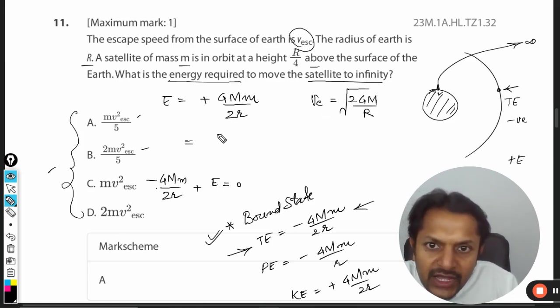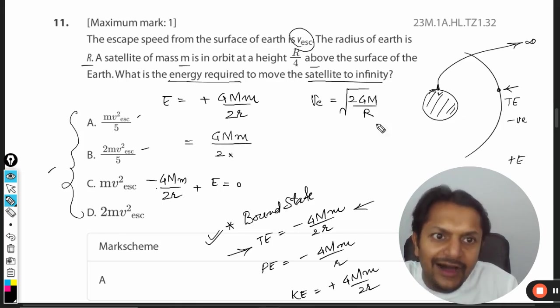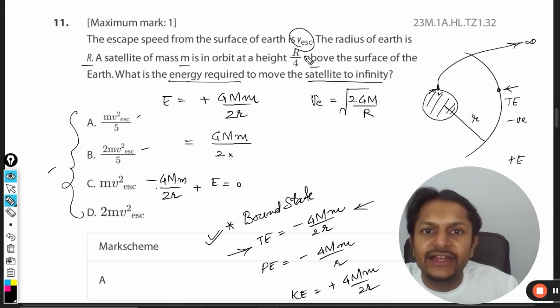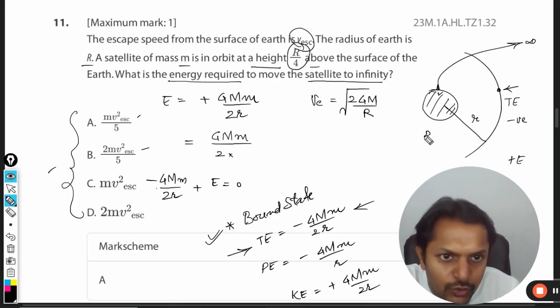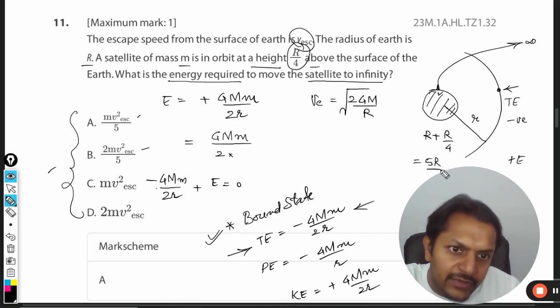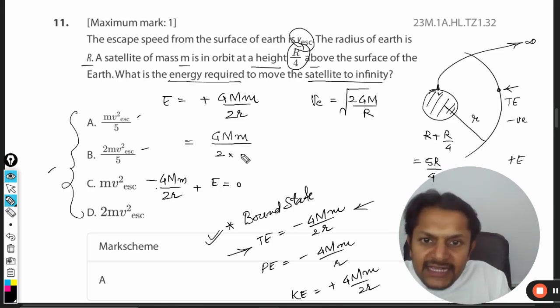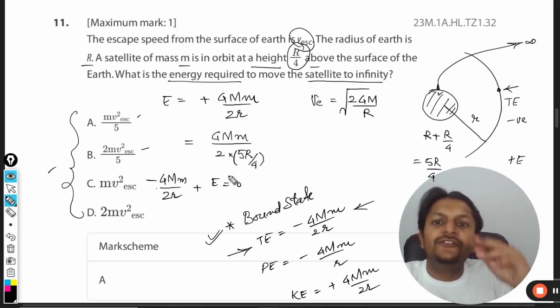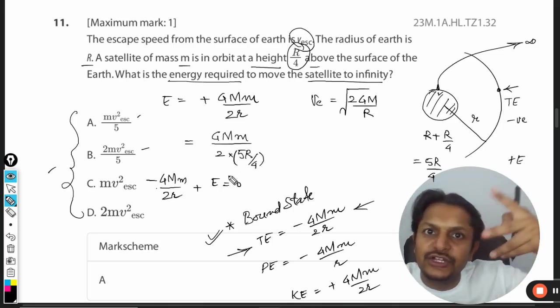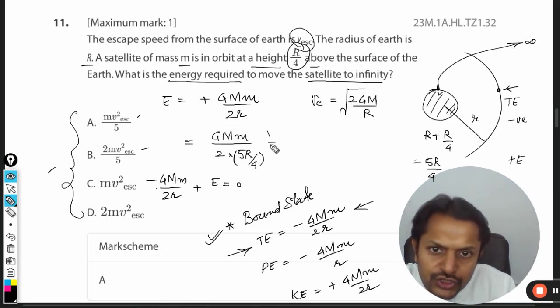The energy is GMm/2r. What is r, the orbital radius? The height is R/4, so r = R + R/4 = 5R/4. Substituting this, we get E = GMm/(2 × 5R/4) = 4GMm/(2 × 5R) = 2GMm/5R.